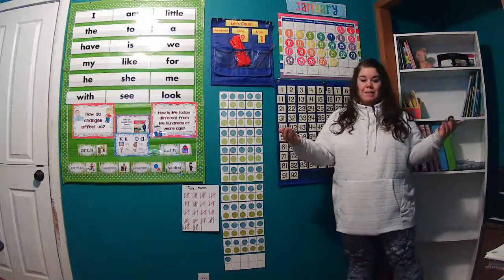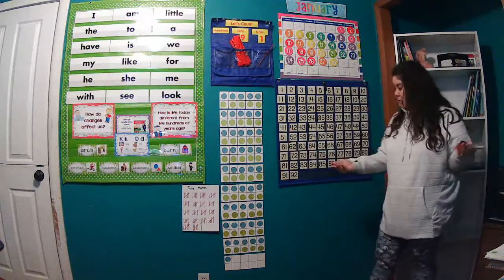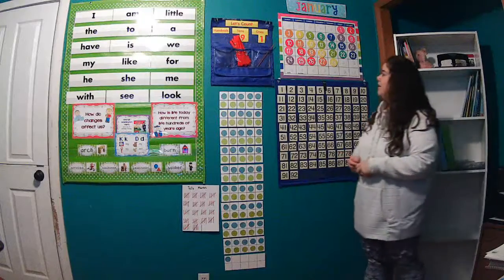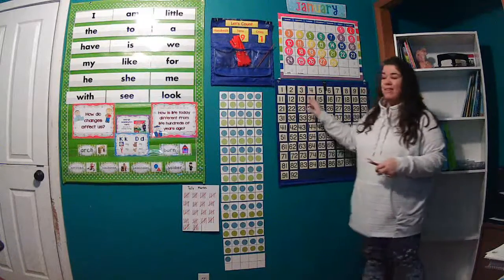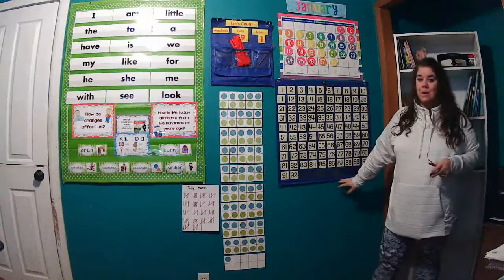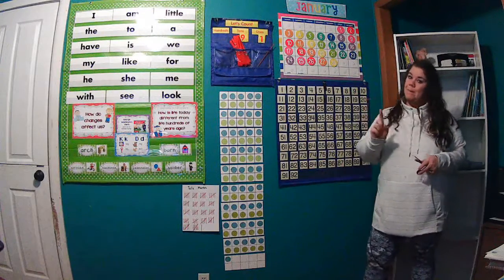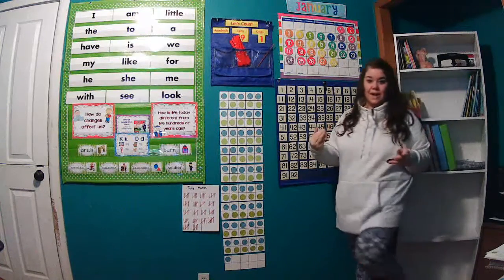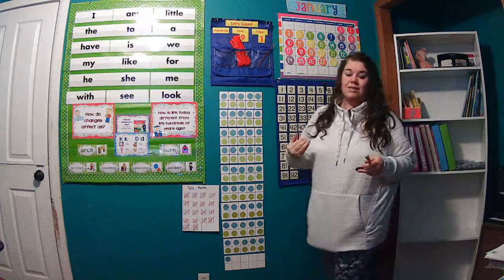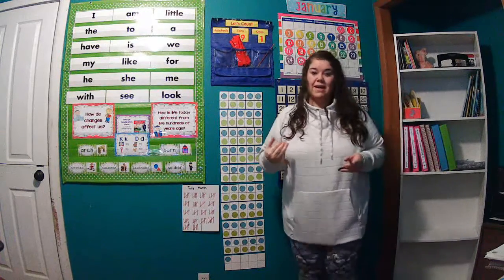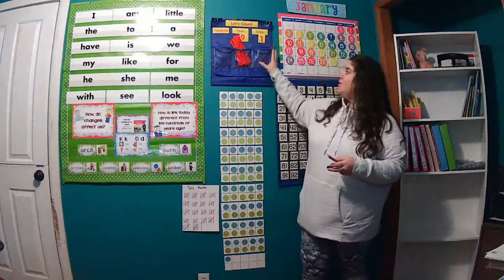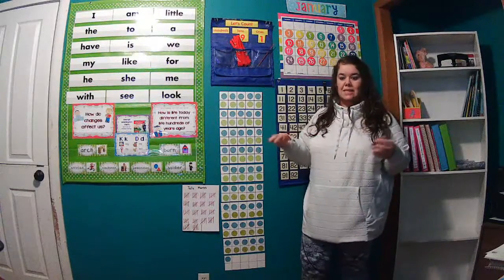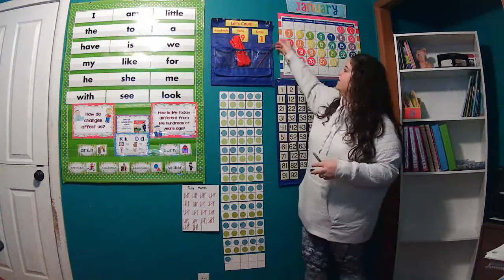Good job counting all the way to 92. That is by far the slowest way we count — when we count by ones. That's why we practice our shortcut counting, or our skip counting. So when we do our place value chart, we count by tens the say-ten way.